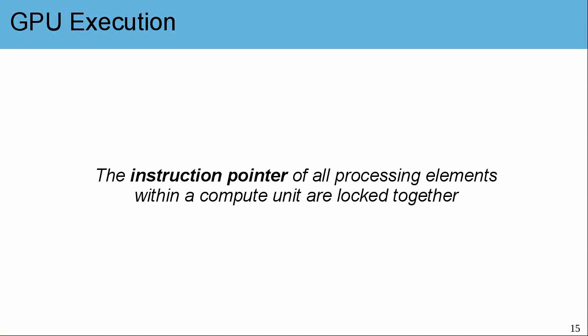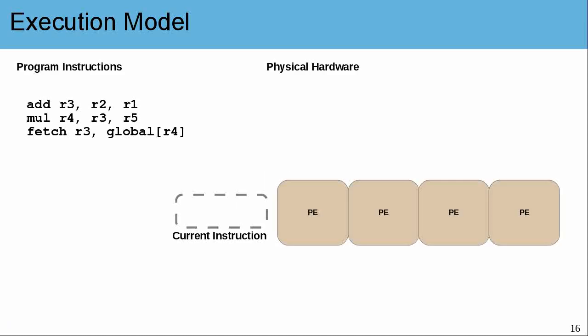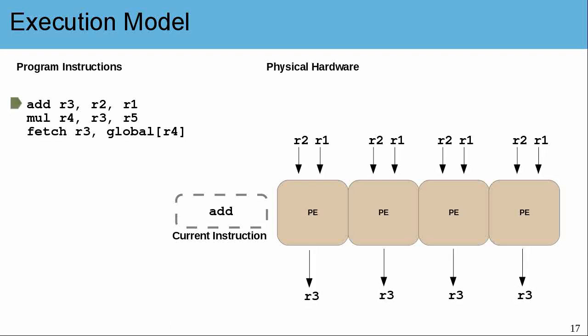The GPU execution model is a little bit odd. In particular, the instruction pointer of all processing elements within a compute unit are locked together. Let's look at some instructions in a made-up low-level assembly language just for illustration. On the right, I'm only showing you four processing elements to condense the discussion. Each of the four processing elements has its own copies of registers R2 and R1, and they'll have their own output to R3. However, each processing element is executing the same add instruction.